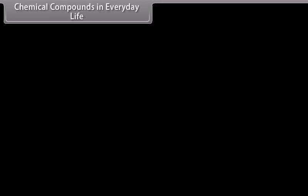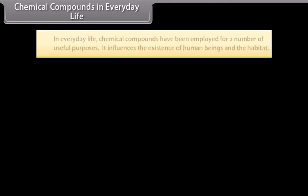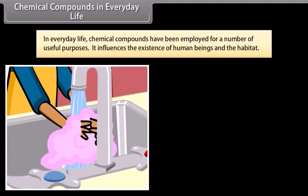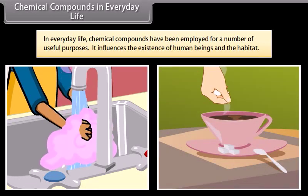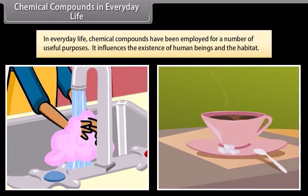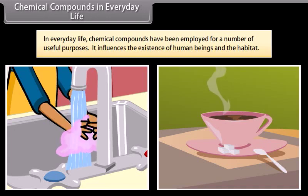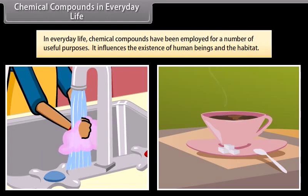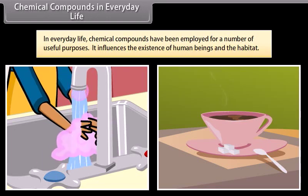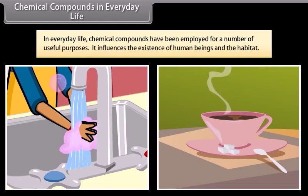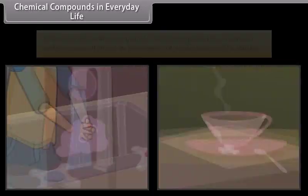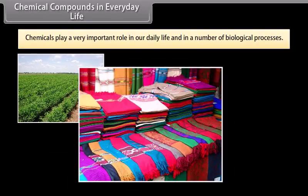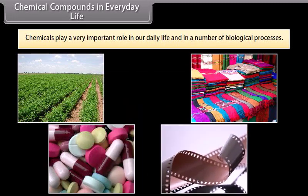In everyday life, chemical compounds have been employed for a number of useful purposes. For example, sugar is used to sweeten tea; soaps are used for washing and bathing purposes. It influences the existence of human beings and their habitat. Besides those, a number of compounds find application in agriculture, textiles, medicines, photography, etc. Thus, chemicals play a very important role in our daily life and in a number of biological processes.